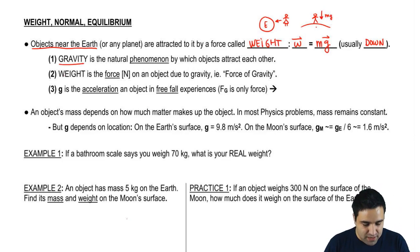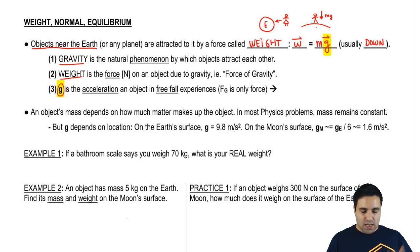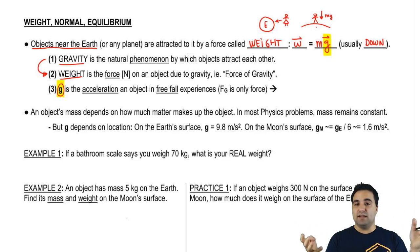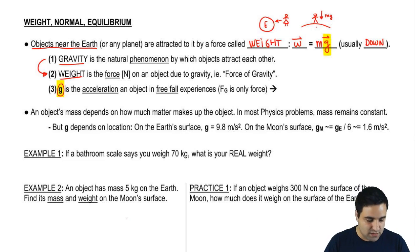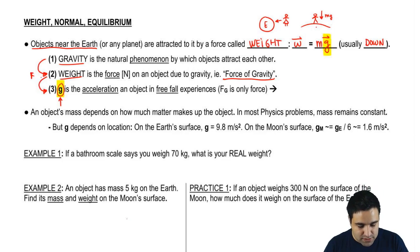I have to make a distinction between gravity, weight, and little g — the gravity constant, which is 9.8 if you're on the earth. Gravity is a natural phenomenon by which objects attract each other — it's the name we give to the fact that every two objects attract each other. Weight is the force that happens as a result of that phenomenon — the name given to the attraction force. Little g is the acceleration as a result of that force. If f equals ma, a force gives you an acceleration. So weight is a force, and little g is an acceleration.